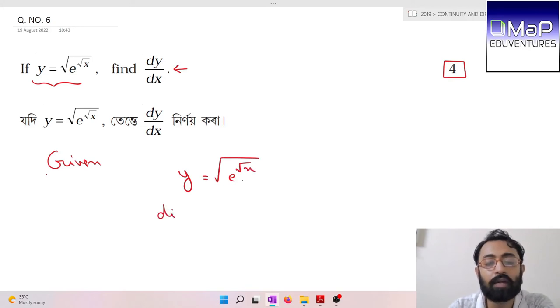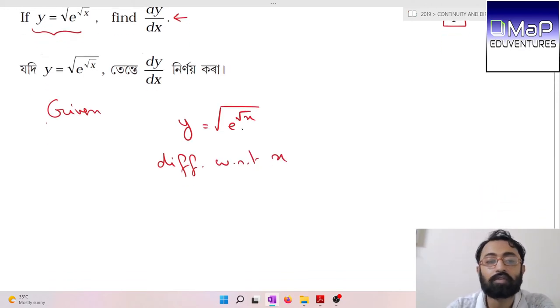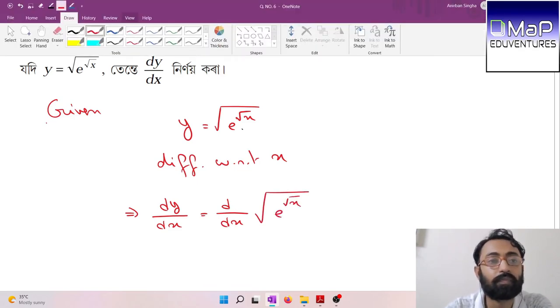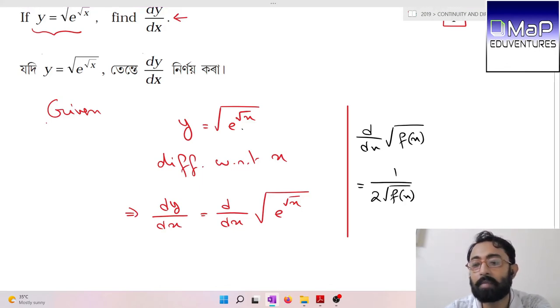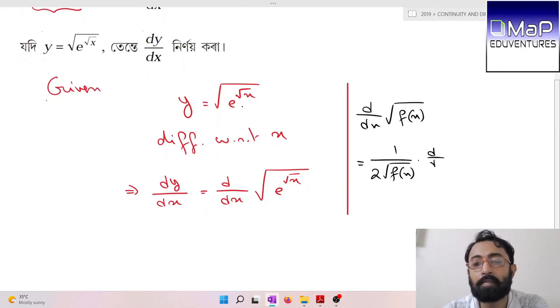Given: y = √(e^√x). Differentiating with respect to x, dy/dx = d/dx of √(e^√x). We'll use the chain rule. d/dx of √f(x) = 1/(2√f(x)) times d/dx of f(x).